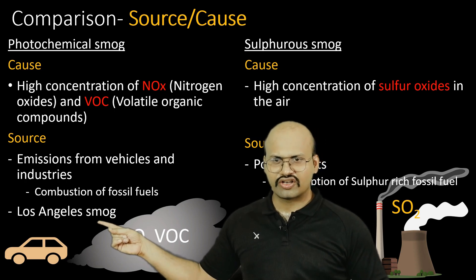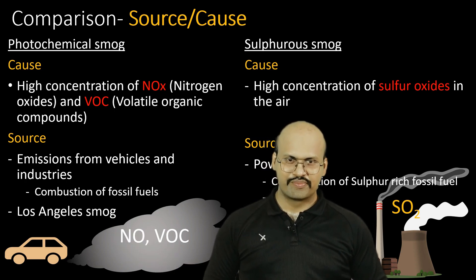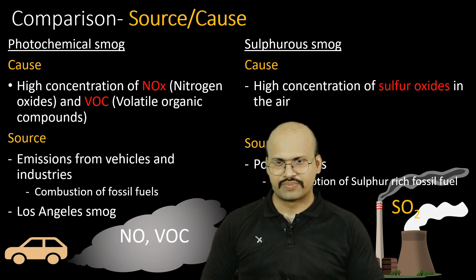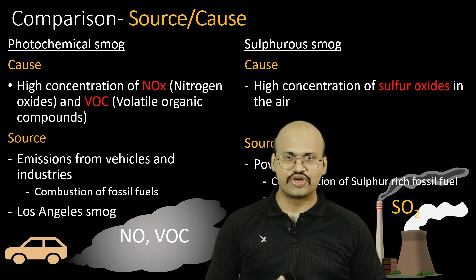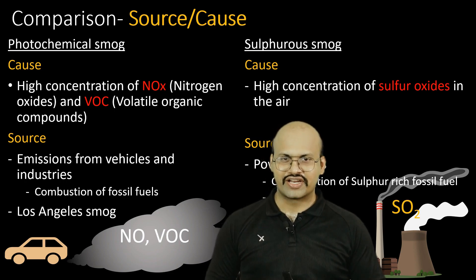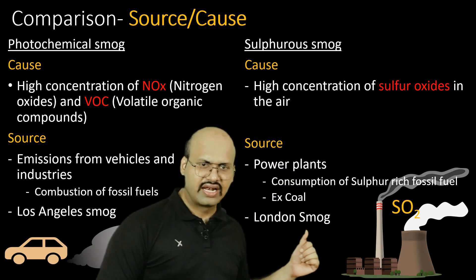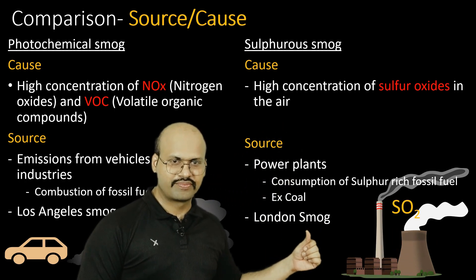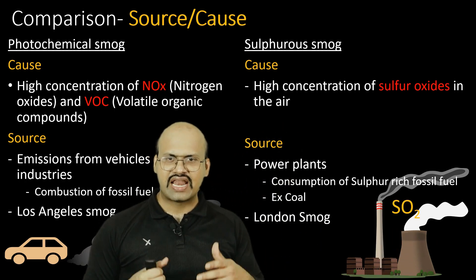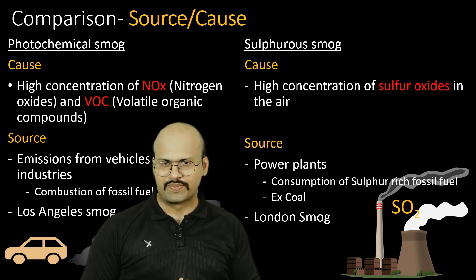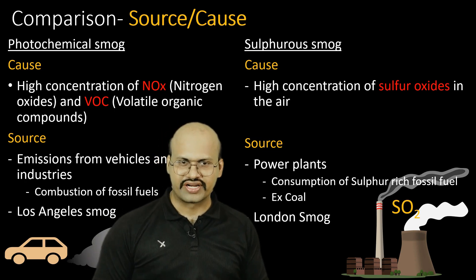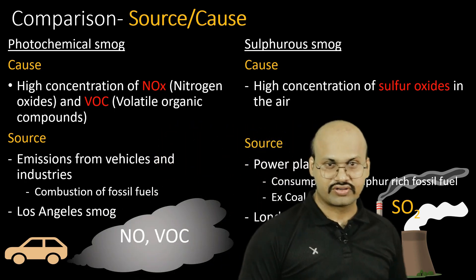Photochemical smog is called Los Angeles smog because this kind of smog was first observed in Los Angeles, where a large number of vehicles produced smog. Sulfurous smog is called London smog because it was first observed in London, where there were a large number of thermal plants around the city and their smoke created this sulfurous smog.